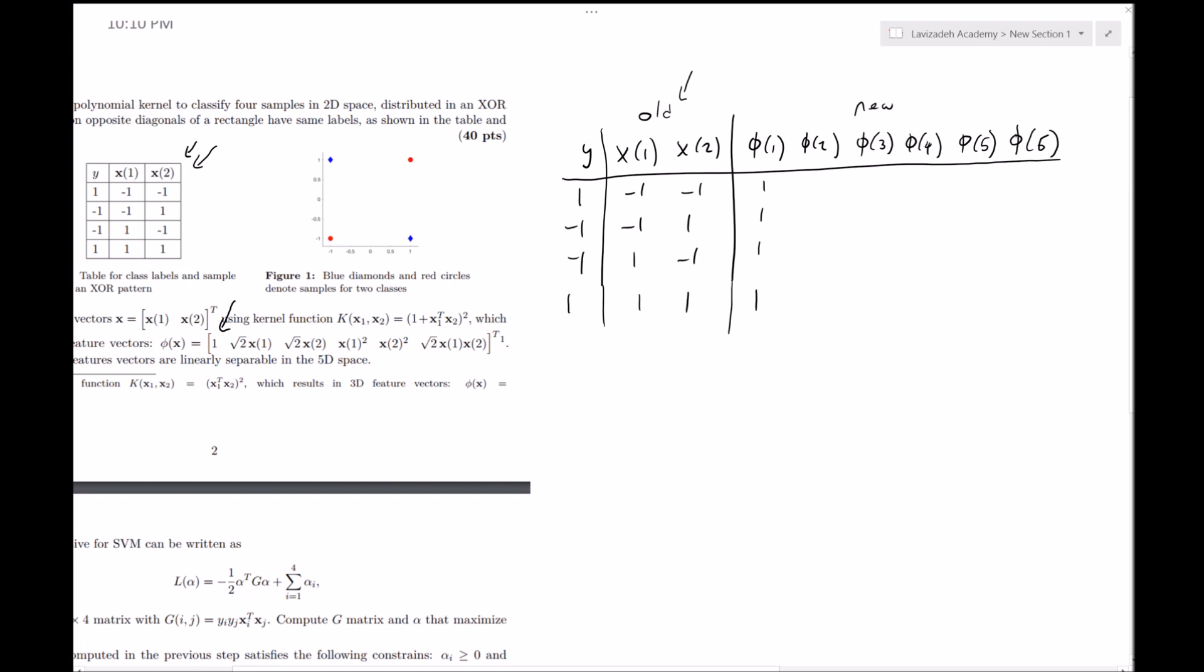The new one is going to be root 2 times the first element of x. So root 2 times negative 1 is negative root 2, and we're just going to fill out the data. This is also negative root 2. This is going to be x1 squared, so this is 1. x2 squared is 1, and this is root 2 times negative 1 times negative 1, which is root 2.